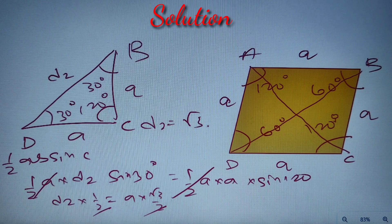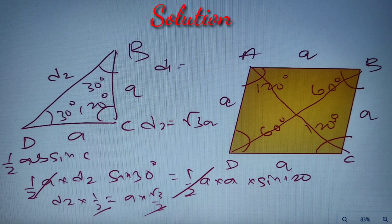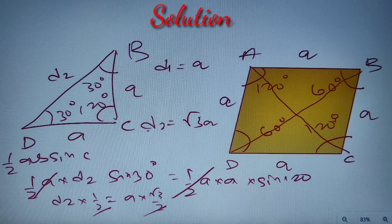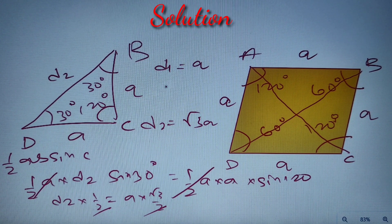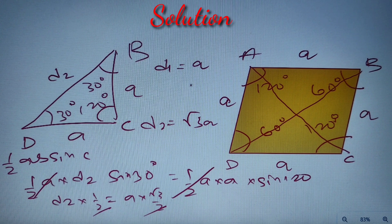Now we have got both the values of D1 and D2, where D1 is equal to a and D2 is equal to root 3 a. We have to find the ratio of the shorter to longer diagonal. Now since root 3 a is clearly greater than a, we can say that we have to find the value of D1 by D2.